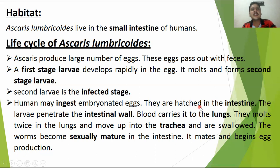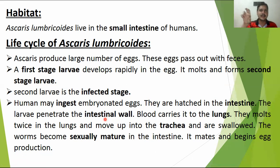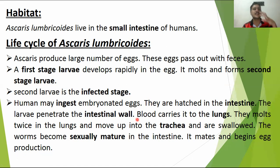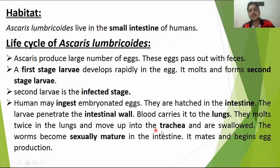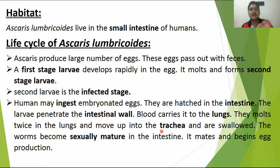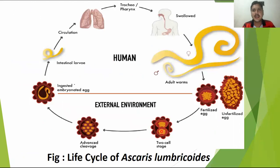The larvae move through the intestine wall, penetrate it, and can migrate. Blood carries the larvae towards the lungs, where the lungs are the site for molting — Ascaris molts two times inside the lungs. From the lungs, they move towards the trachea, from where they are swallowed again. When swallowed, they move back towards the digestive tract, to the intestine region where they become sexually mature, mate, and the next egg production takes place.